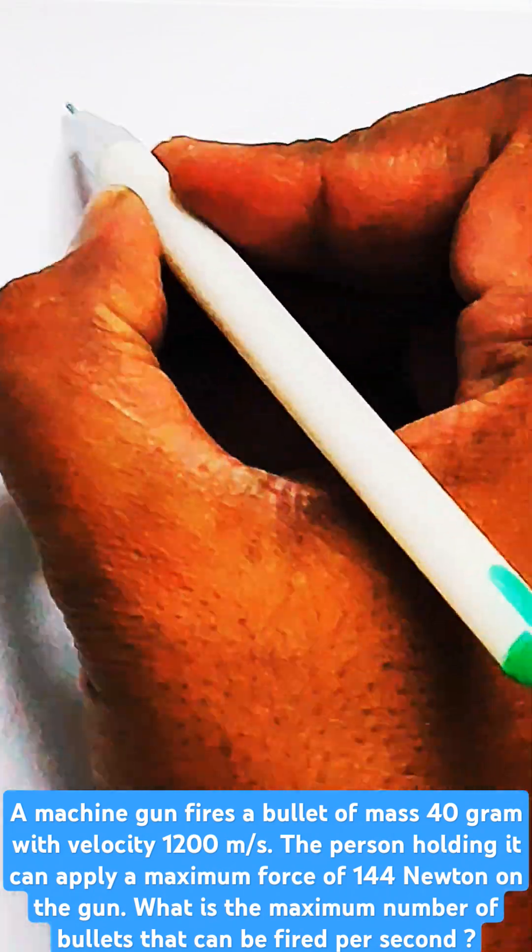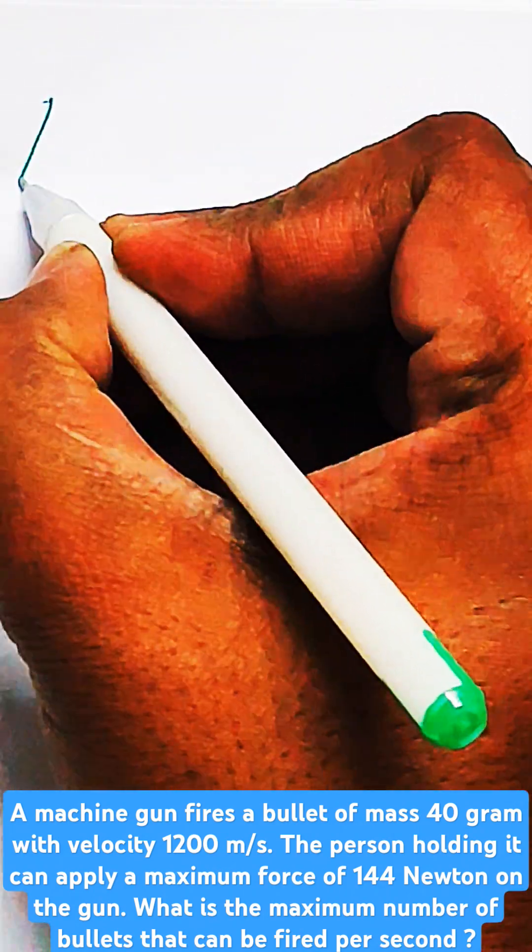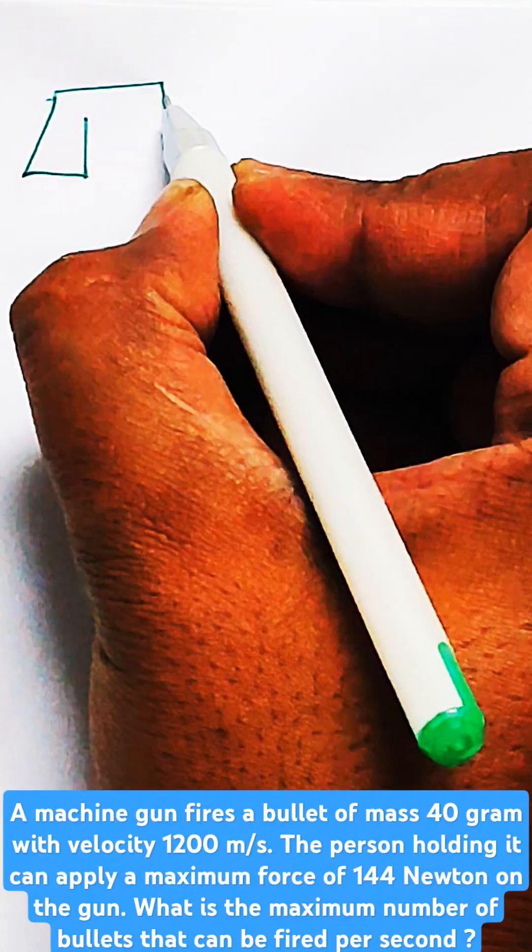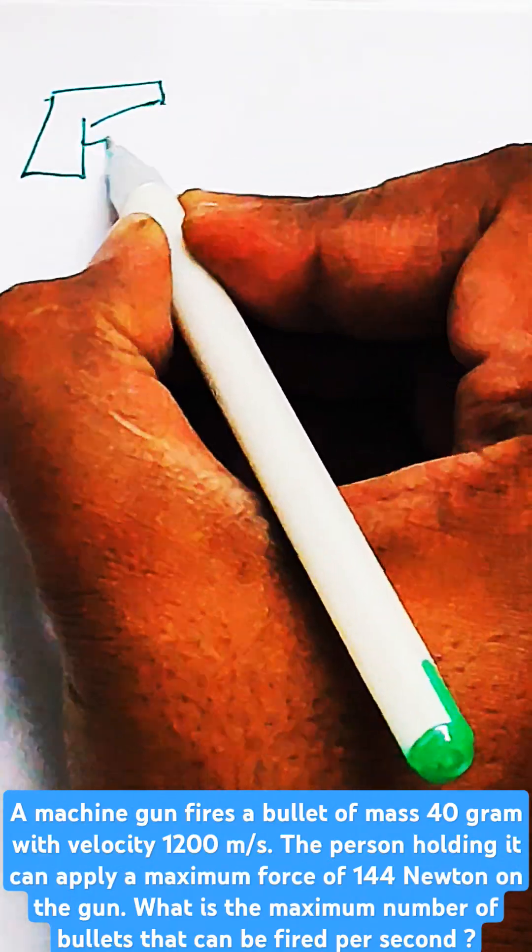This is a very good numerical problem where the application of Newton's second law can be seen. A machine gun fires a bullet of mass 40 grams.